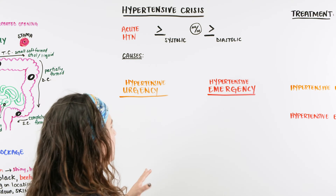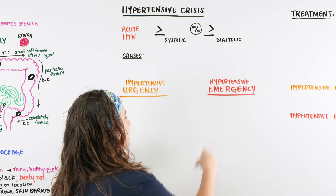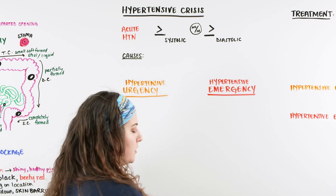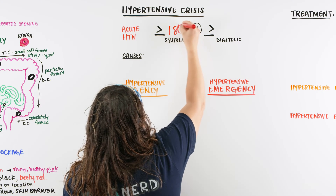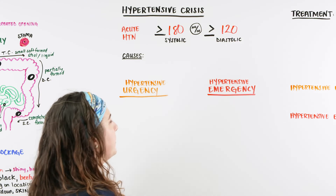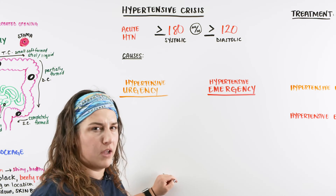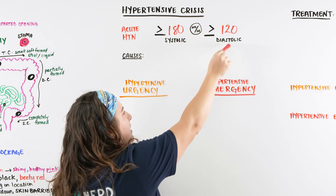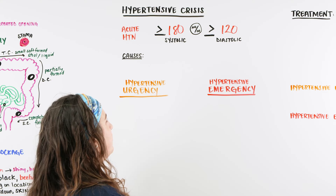When we talk about hypertensive crisis, we're going to be breaking it down into hypertensive urgency and hypertensive emergency. Hypertensive crisis is a little further along than just having hypertension. We can define it as having acute hypertension with a systolic greater than 180 and/or a diastolic greater than 120. For example, a blood pressure of 188 over 100, or 160 over 122, could indicate hypertensive crisis.